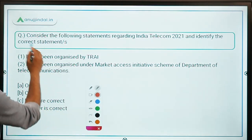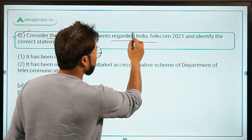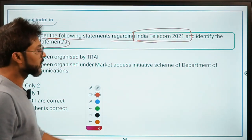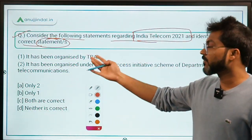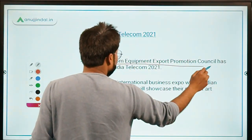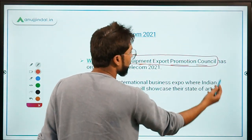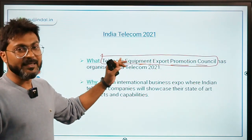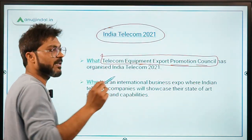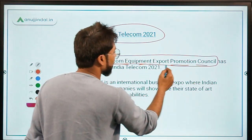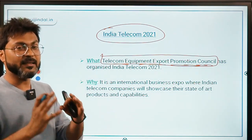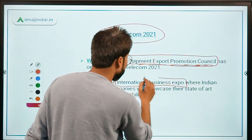Question 3: Consider the following statements regarding India Telecom 2021 and identify the correct statement. This event was organized by the Telecom Equipment Export Promotion Council — do not confuse this with TRAI, which is a different organization. India Telecom 2021 was organized by the Telecom Equipment Export Promotion Council.